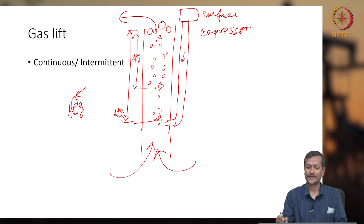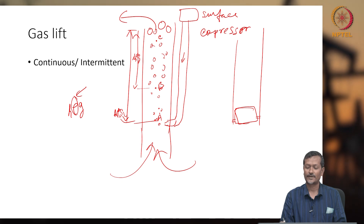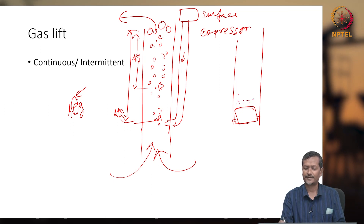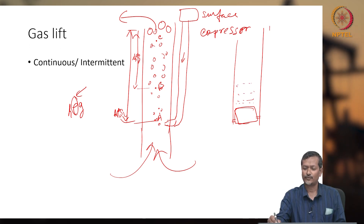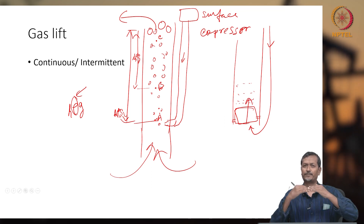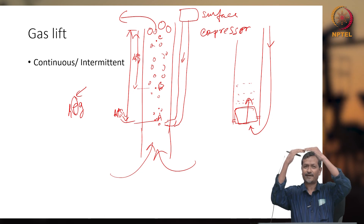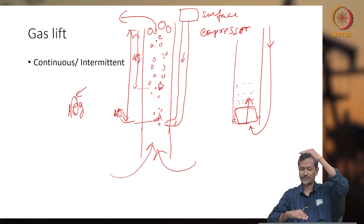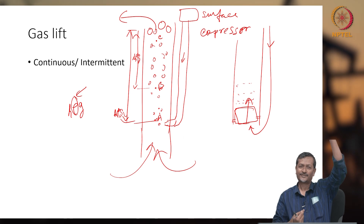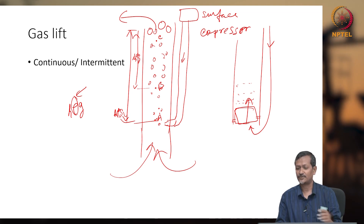The intermittent gas lift system is used for very low productivity wells. A plunger and plunger catcher are installed. When very low amounts of liquid accumulate in the wellbore, you let the liquid column build up, then inject gas from the surface at a high rate to push the plunger upward. All the liquid above the plunger exits the wellbore. When the plunger reaches the surface, it is held briefly, then drops back down to the catcher. This cycle — maybe 2 to 5 trips per day — allows intermittent production from low-flow wells.